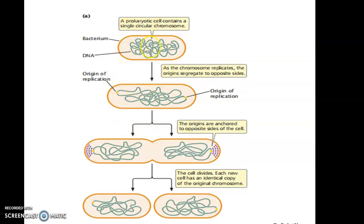At this rate, a single bacterial cell produces a billion descendants in just 10 hours. This is the story of cell division in prokaryotes. Thank you.